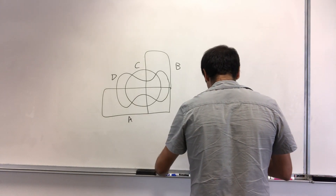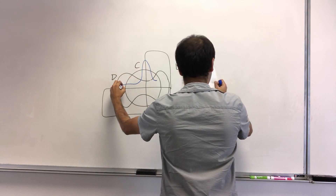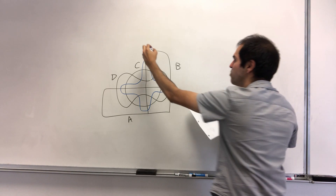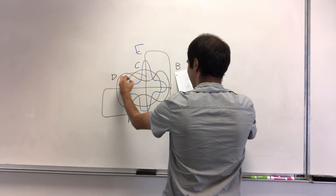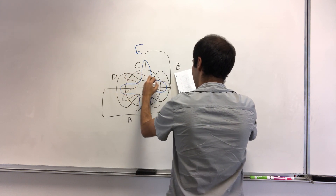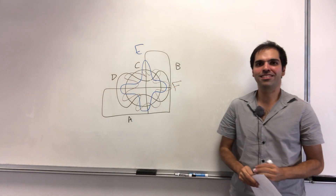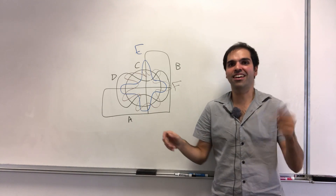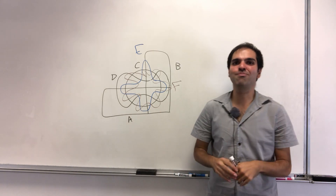The nice thing is this generalizes to five sets or more. If you want a fifth set, you would just draw another blob — something like this — and that would be your set E. You could also add another blob for set F. There's also a model where you use, for every i, sine of 2 to the i times x, and that will also generate a nice picture of Venn diagrams.